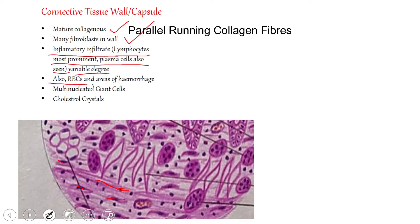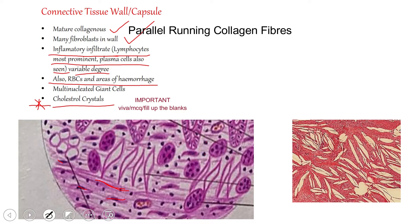RBCs and areas of hemorrhage are also present, and you may also appreciate cholesterol crystals. Due to the breakdown of RBCs, cholesterol is released into the connective tissue wall. However, what we actually see on the histological slide are cholesterol clefts — these are slit-like spaces where cholesterol was present. During preparation of the slide, the cholesterol is lost, leaving these spaces called cholesterol clefts. They may be seen in the connective tissue wall and may extend into the cavity or be present in the cystic lumen.